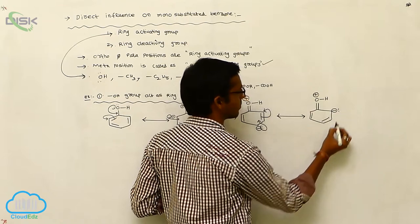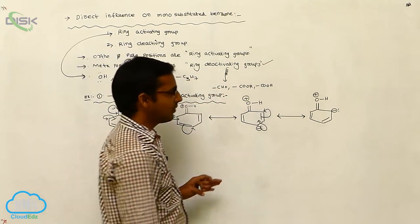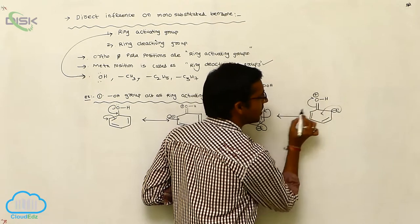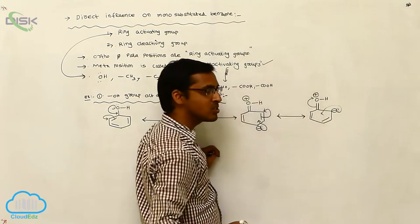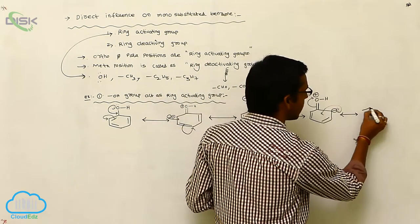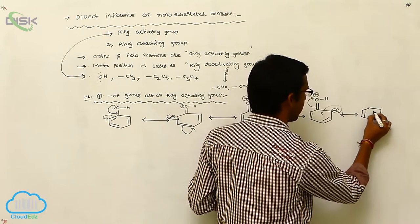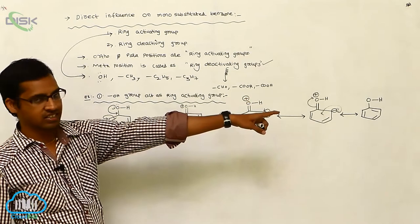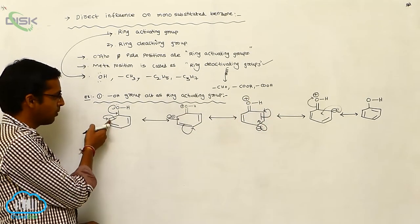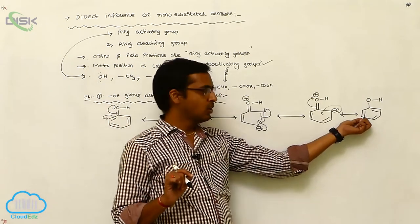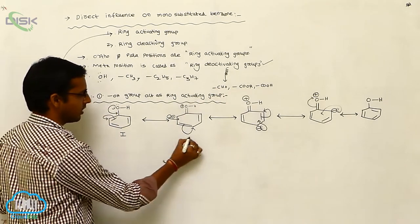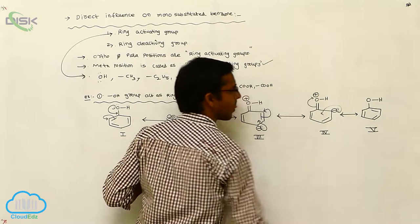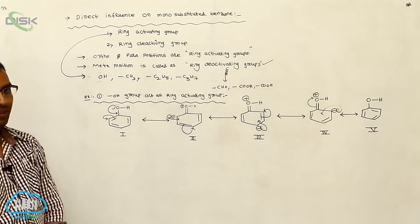The double bond converts to a single bond. The first and last resonating structures are the same in connectivity but differ in arrangement of double bonds. These are your five resonating structures: structure 1, structure 2, structure 3, structure 4, and structure 5. This represents the ring-activating group at ortho and para positions.